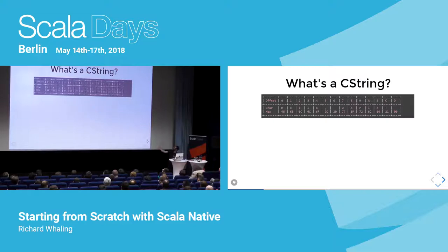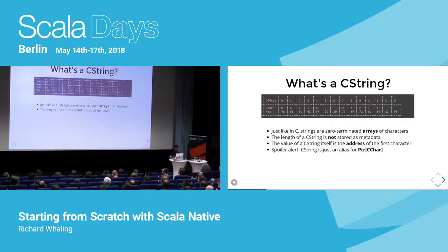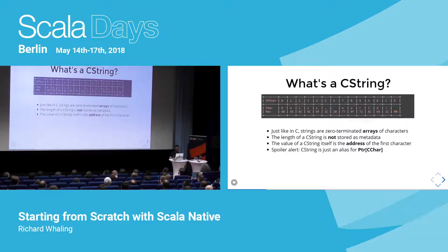A C string is really just a bunch of bytes, one after the other — one ASCII character per byte — with a zero byte marking the end, all in contiguous memory. Because of that, you don't store the length or any metadata. The value of the C string is just the address of the very first character. There's a lot of semantic weirdness that comes from this — it doesn't entirely make sense and it's broken in a lot of ways, but that's what C gives us, and if we want to write programs at C speed, we have to deal with it.